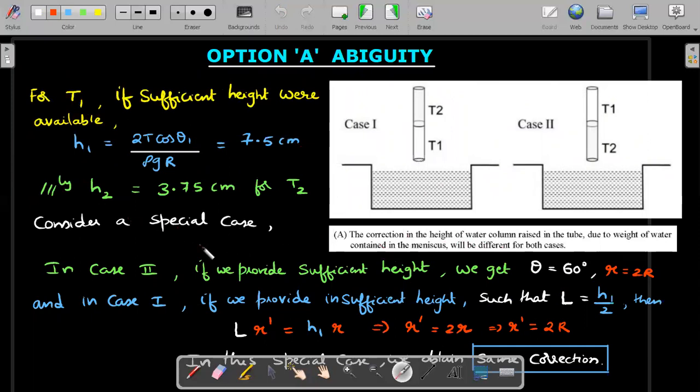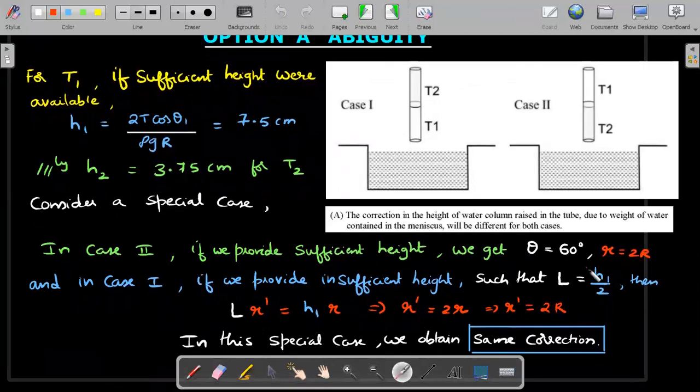This is the option A ambiguity I'm going to deal with. Again, the top part is just borrowed values of the 7.5 and 3.75 for our correction. Let's consider a special case. In case two, if I provide sufficient height, I end up getting the usual contact angle of 60 degrees. And you remember small r is capital R by cos θ, I'll get two capital R. Now what I'll do is in case one, I'll not provide sufficient height. And I'll take this capital L in such a way that it is half of this number. That means I'll match this 7.5 to this 3.75. Now, then the value of this product: capital L into the new value of r prime in case one would be h1 into r. And then this cancellation takes place and I end up getting two smaller r. And you remember the small r of case one is related to a θ of zero degrees. Therefore, small r prime in case one also I can make it two capital R. So a lot of students in those days when they wrote the exam, they come out saying that I can manage a case in which the case two and case one's angle of contacts will become same or the meniscus radius becomes same. So in this special case, we obtain the same correction.